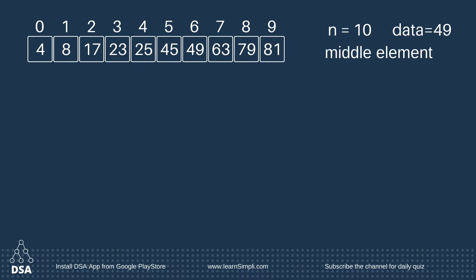First we will find the middle element of the array. To find the middle element we are going to take two variables. The first variable is at index 0 — the left variable, named L. The last variable is at index 9 — named R, the right variable.